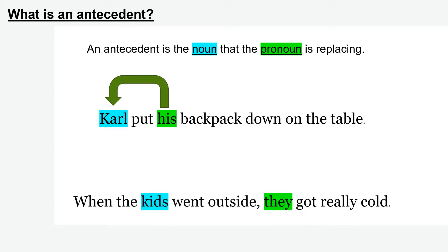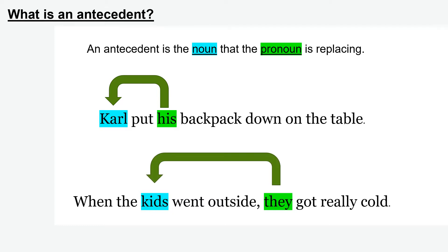We can also see this in the sentence: 'When the kids went outside, they got really cold.' They is replacing the noun kids. So kids and Carl in these situations are antecedents — they are the noun that is being replaced.